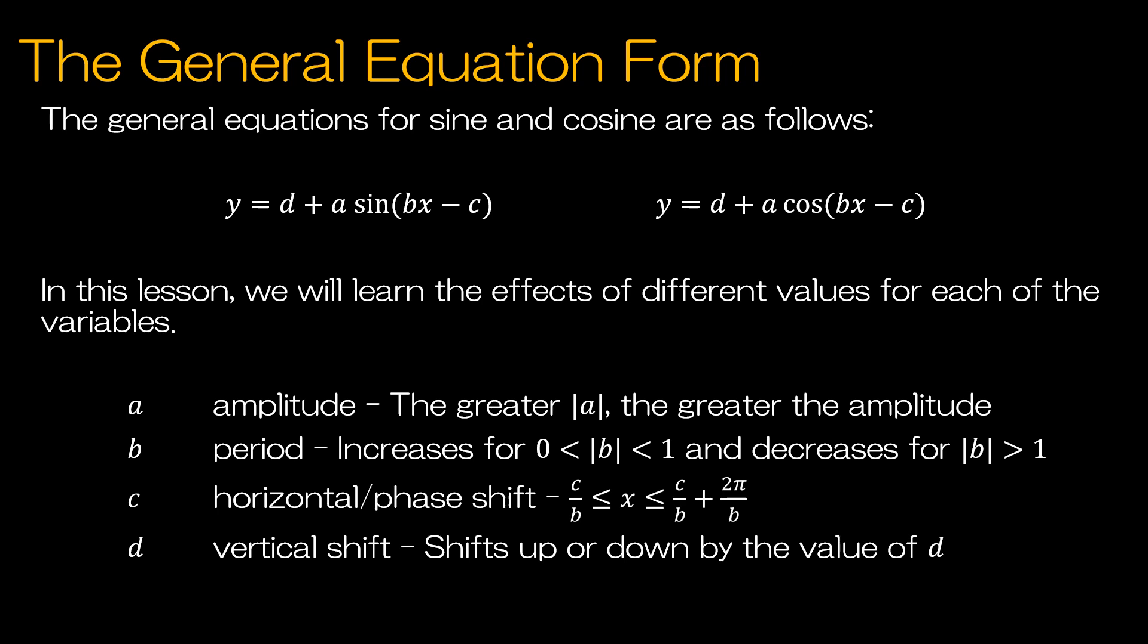b is the period. That's going to increase for 0 to 1 values of the absolute value of b, and decrease for b greater than 1. And so what we mean is, if our original function looks like this, if b is between 0 and 1, then our period is going to get smaller, so you're going to see it look maybe like this. Or if it's greater than 1, maybe it'll look like this. So we can see it's going to either stretch out or smoosh together.